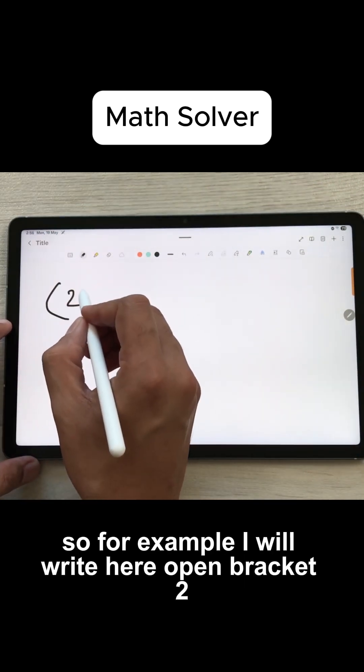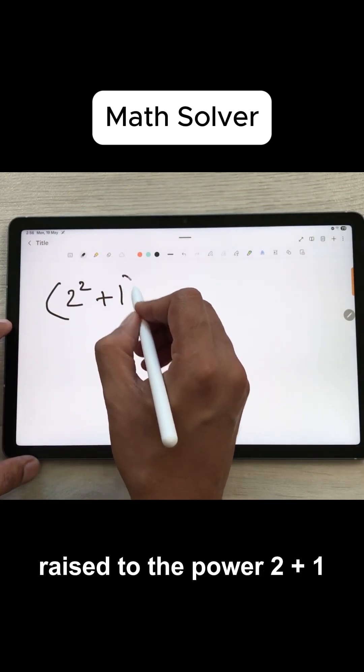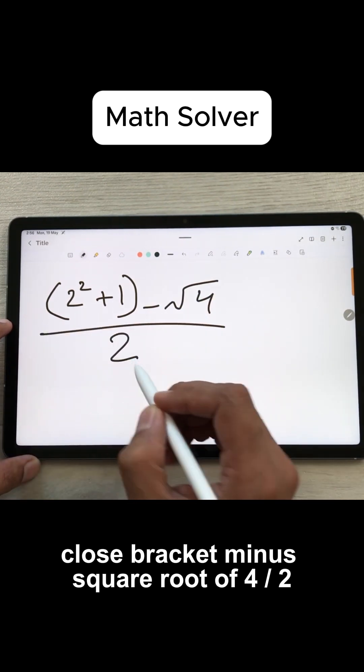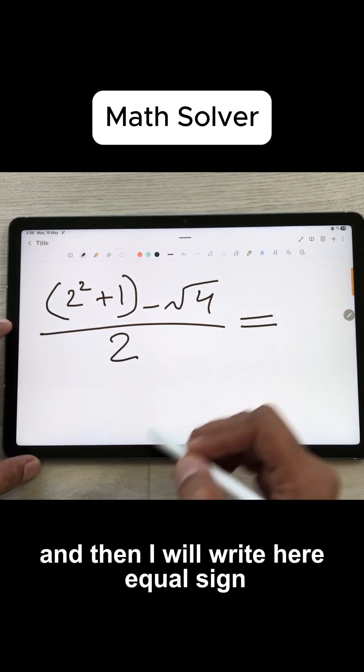For example, I will write here open bracket 2 raised to the power 2 plus 1 close bracket minus square root of 4 divided by 2 and then I will write here equal sign.